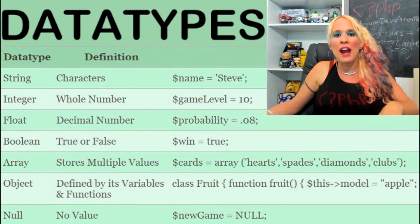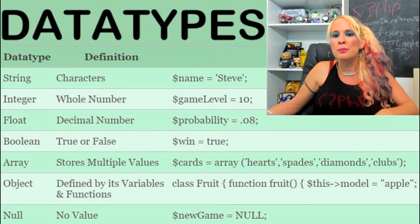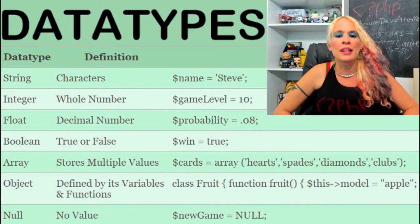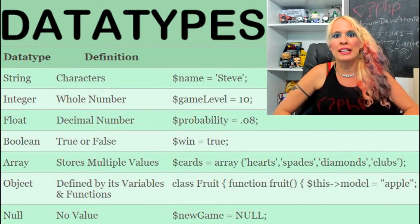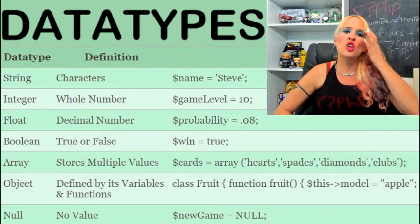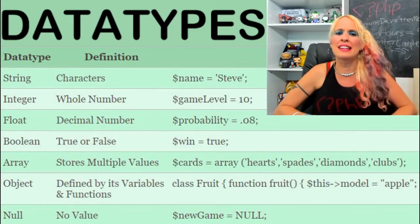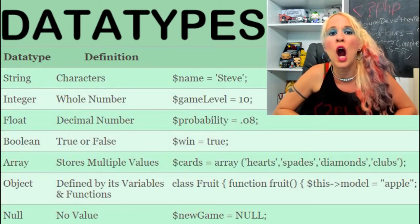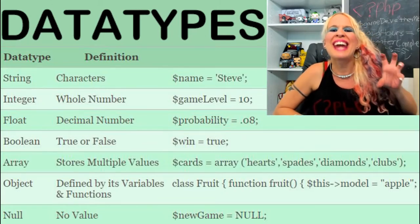For constants and variables, there are different data types because we have different types of data. The first one is a string. An example of a string would be dollar sign name equals Steve. A string contains letters, words, paragraphs, and characters.